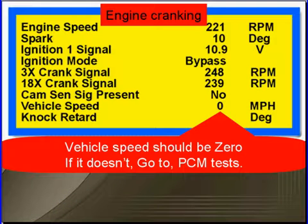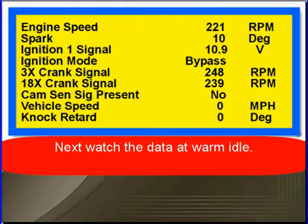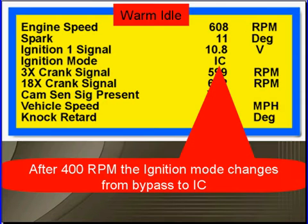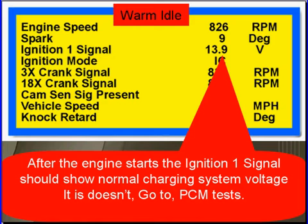Vehicle speed should be zero — if not, go test the PCM. Knock retard should be zero — if not, go test the PCM. Next, watch the data at warm idle. After 400 RPM the ignition mode changes from bypass to IC. How do we know that? Because we used vehicle-specific information, and the key facts it told us that the PCM times the spark over 400 RPM, so we knew it should change to IC after 400 RPM.